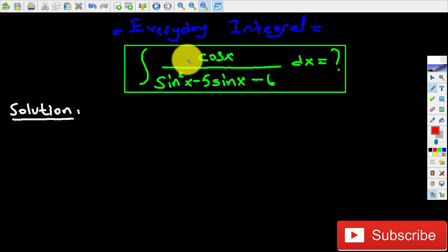Basically, if I set u equal to sine x and differentiate, we get du equals cosine x dx.